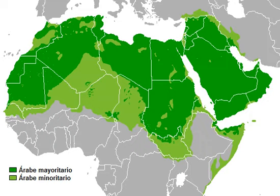Grammatical features that have no counterpart in any modern dialect, such as the energetic mood, are almost never used in Modern Standard Arabic. No modern spoken variety of Arabic has case distinctions. As a result, MSA is generally composed without case distinctions in mind, and the proper cases are added after the fact when necessary. Because most case endings are noted using final short vowels, which are normally left unwritten in the Arabic script, it is unnecessary to determine the proper case of most words. The practical result is that MSA, like English and standard Chinese, is written in a strongly determined word order.